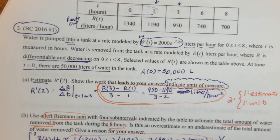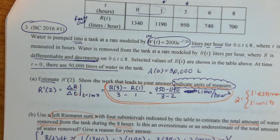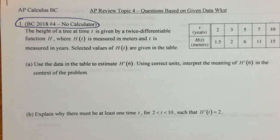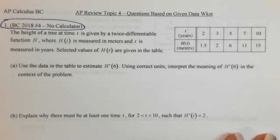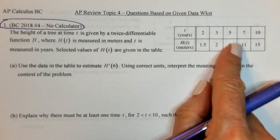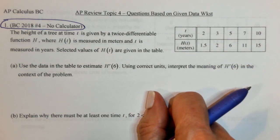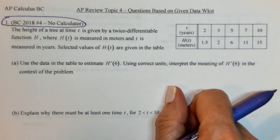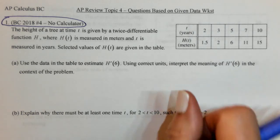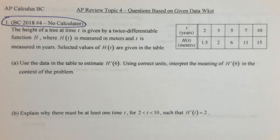That was 2016 — I chose it first because it was a rate in/rate out problem to reinforce what we learned. Now let's go to the 2018 problem, which was number 4 with no calculator. It has a table of values. Part of this question was actually on our very first Unit 1 worksheet packet, so we've been working with this problem throughout the year.